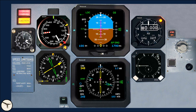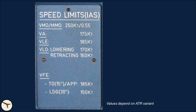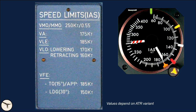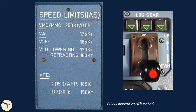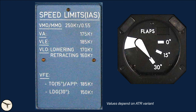Here is a placard showing some important speed limitations. VMO is maximum indicated airspeed, indicated by the barber pole on the airspeed indicator. MMO is the maximum Mach number. VLA is maximum manoeuvring speed, which is the maximum speed where you can apply maximum deflection of the flight controls. VLE is maximum speed with the landing gear extended. VLO is maximum speed when the landing gear is operating, meaning lowering or retracting. VFE is maximum speed with flaps extended.